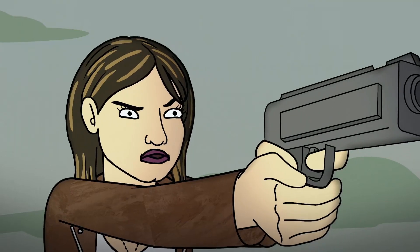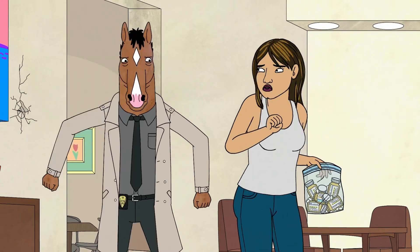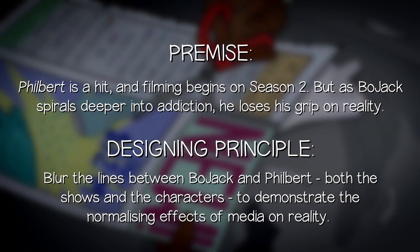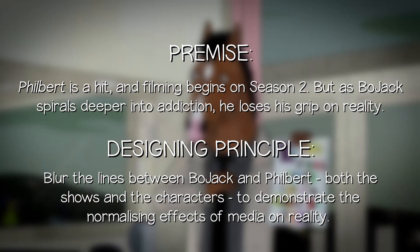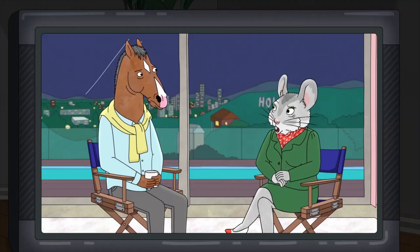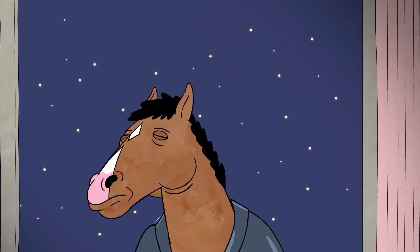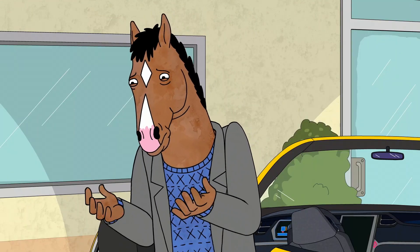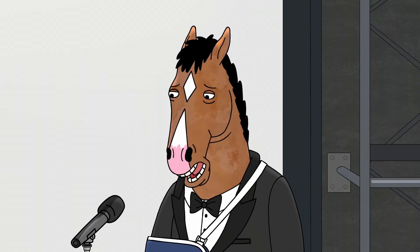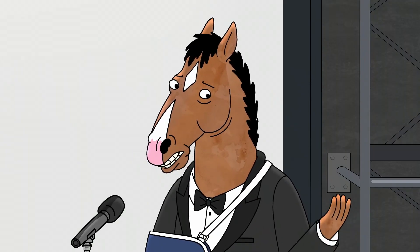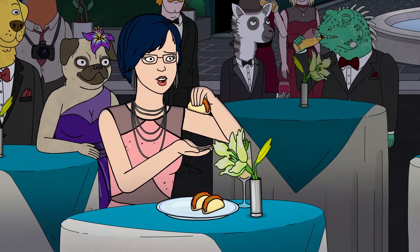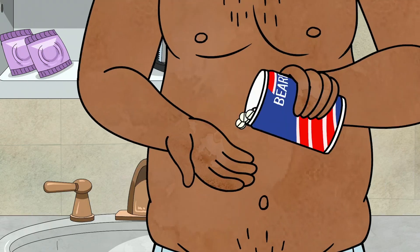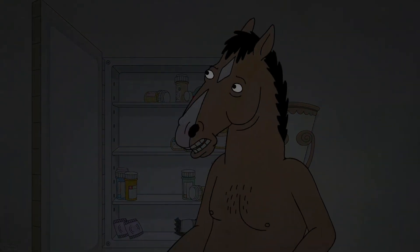It therefore makes sense that the season climax should represent these fears taken to their worst extreme. The designing principle for this episode could be: blur the lines between Bojack and Filbert, both the shows and the characters, to demonstrate the normalizing effects of media on reality. Bojack functions here as both a problematic celebrity figure and an over-invested viewer, as his exposure to the character of Filbert throughout the season has caused his viewpoint to shift from 'Filbert's a drunk, he's an asshole, I don't want to be him' to 'we're all terrible, so therefore we're all okay.' By this point, Bojack is actively using Filbert's flaws to justify his own substance abuse, which in turn is diminishing his ability to differentiate himself from the tortured fictional detective.